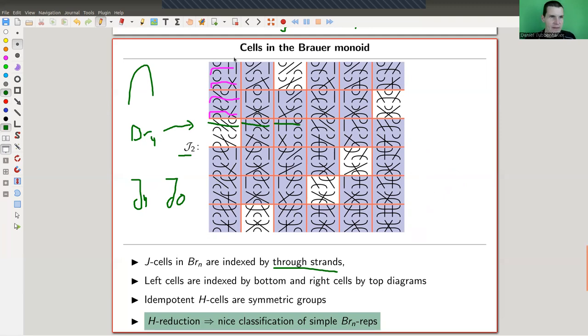The little H-cells, those guys here, are symmetric groups. So this is S2. How do we see that? Let's multiply the elements. The first one, let's multiply it with itself. You get a circle. Remove the circle. So it's actually itself. And this is the idempotent in the cell. It's a unit of this group. And then you have a crossing picture. So it's just S2. The H-reduction gives you a nice classification of simple representations. You have this diagrammatically defined, combinatorially, topologically defined monoid with this extremely beautiful cell picture by through strands, top diagrams, bottom diagrams, and you have symmetric groups inside.